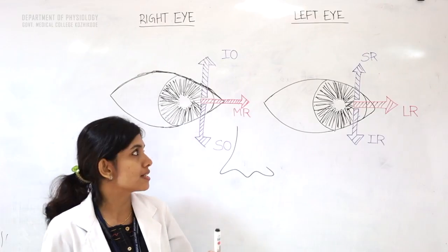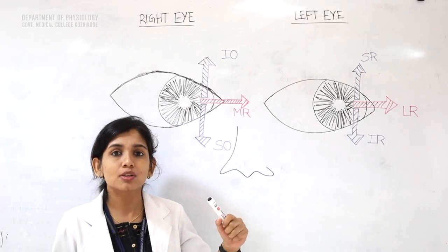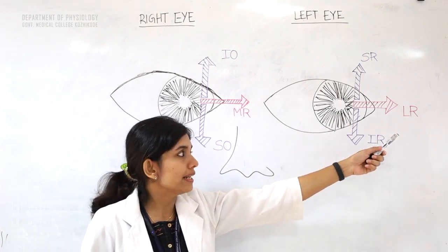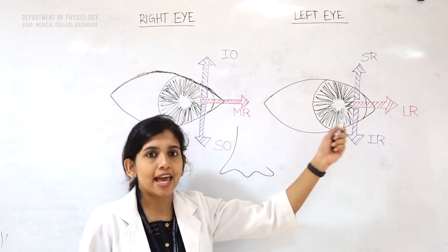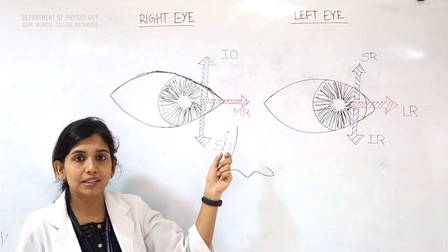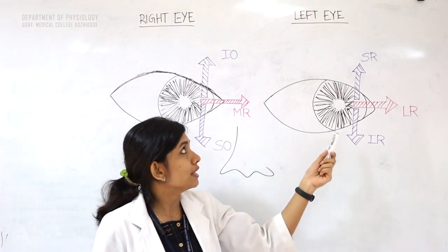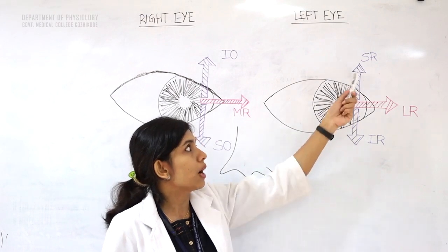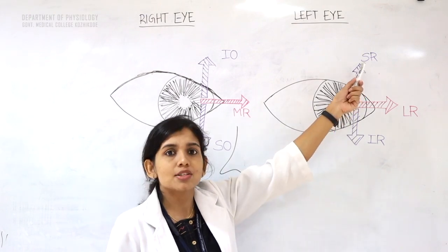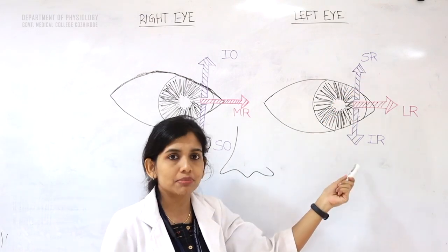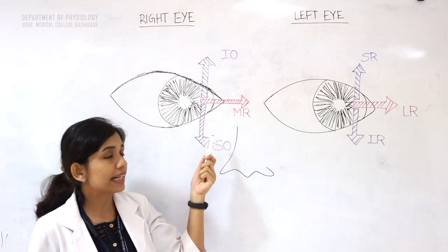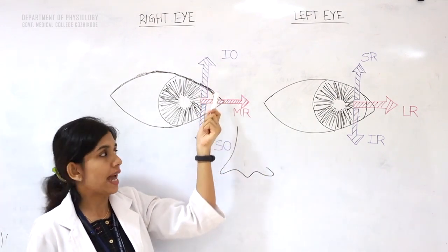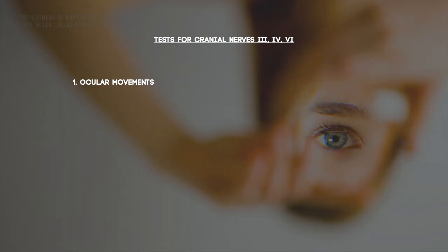Muscles of ocular movements: when the subject looks towards the left side, the left eye is abducted by lateral rectus and the right eye is adducted by medial rectus. The left eye in its abducted position looks upward by superior rectus and depression by inferior rectus. The adducted eye elevation is by inferior oblique and depression by superior oblique.